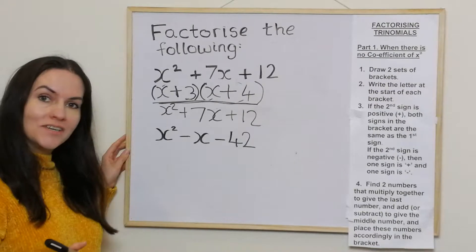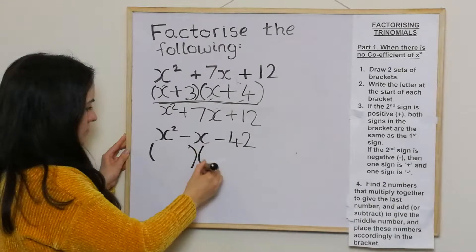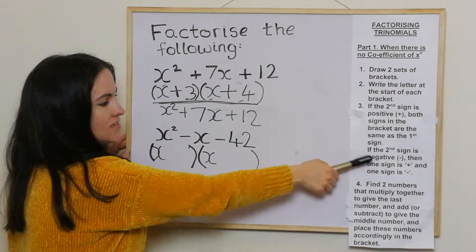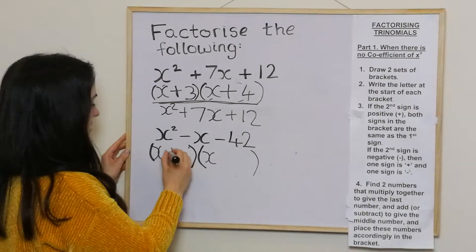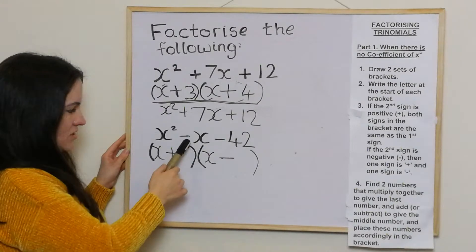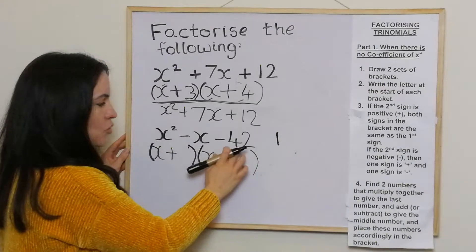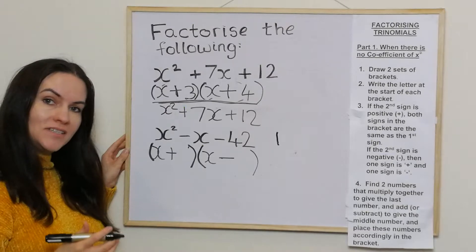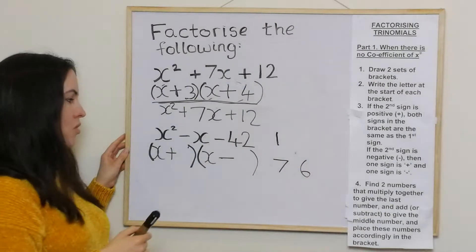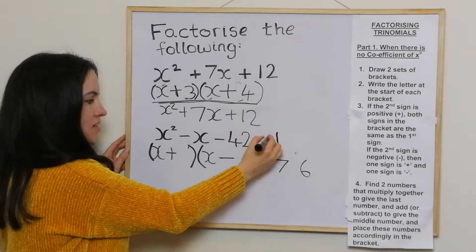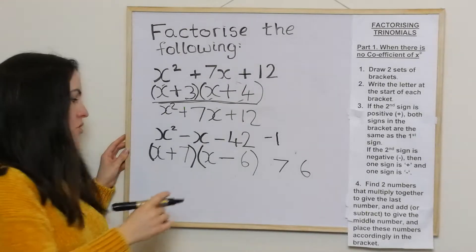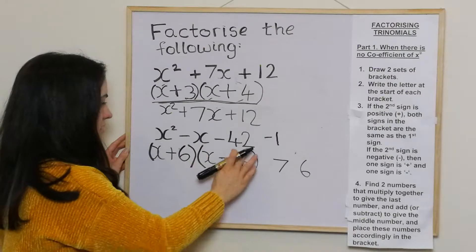The last example is a little bit more tricky. Again, no coefficient, so we draw two sets of brackets and write x. The second sign is negative, so one sign is positive and one is negative. We're looking for two numbers that multiply together to give 42 and add or subtract to give one — essentially negative one. Two numbers that multiply to give 42 are 7 and 6, and 7 take away 6 gives me 1. But we want negative 1, so we add 6 and take away 7.